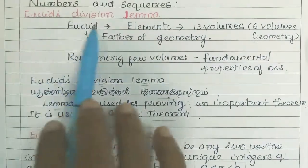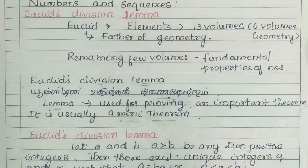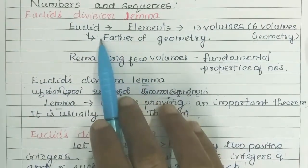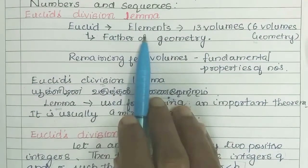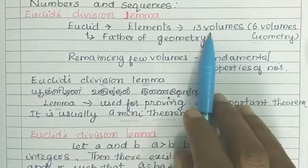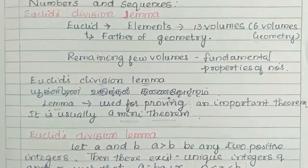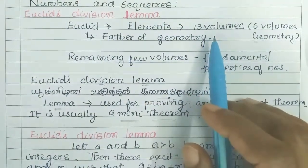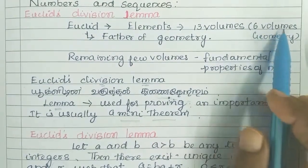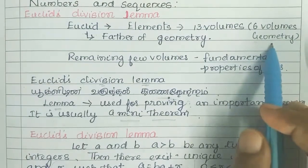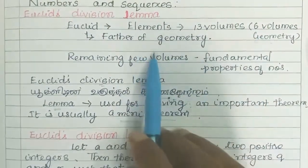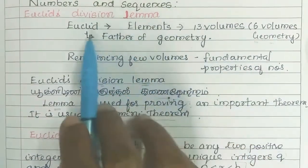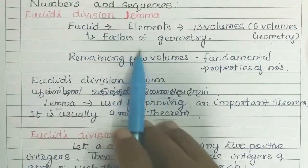Let's talk about Euclid's Division. Before that, let's talk about Euclid's introduction. Euclid is a mathematician. His book, called The Elements, has 13 volumes. The first 6 volumes are Geometry. That is why Euclid is known as the Father of Geometry.